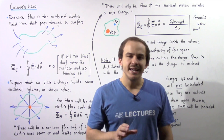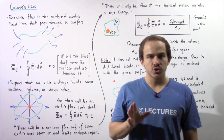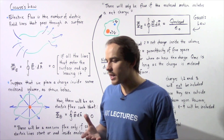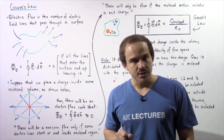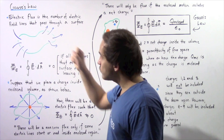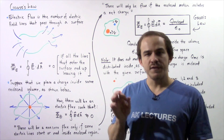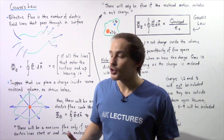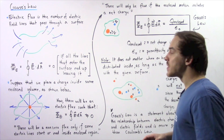In this lecture we begin our discussion on Gauss's Law. In the previous lecture we defined what electric flux is — electric flux is the number of electric field lines that enter or exit a certain surface.